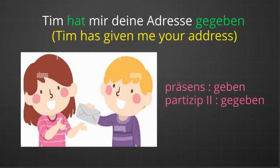"Tim hat mir deine Adresse gegeben." Here, gegeben is the Partizip II form of the verb geben. With geben, Haben is the helping verb because geben is not showing any change in position or change in state. And according to the rule, we have to write the helping verb at second position — that is why hat is at second position and the Partizip II form of the verb is at the end of the sentence.